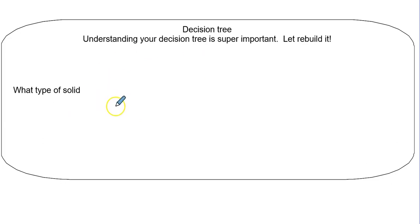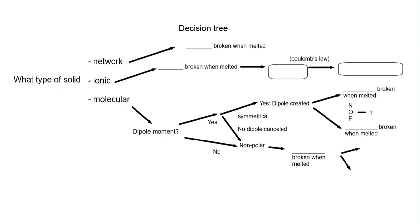Decision trees. Take a moment and jot out your own decision tree. I got one that I put together right here. First, the type of solid, something new here. When a network covalent melts, it breaks a covalent bond. Ionic breaks an ionic bond when melted. We're looking at things to consider when affecting melting point: the charge and the internuclear distance.